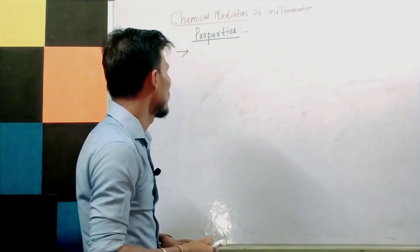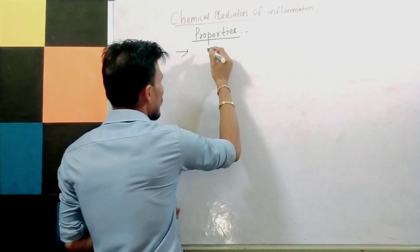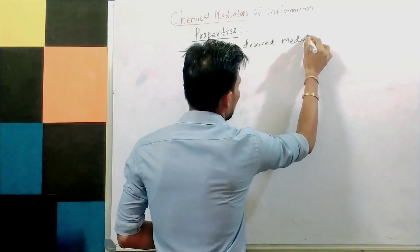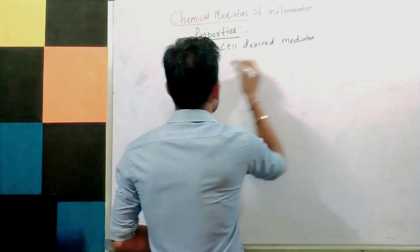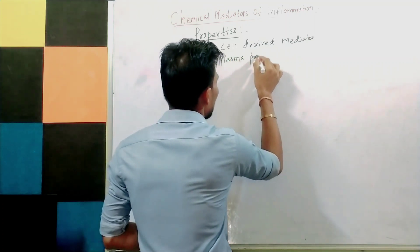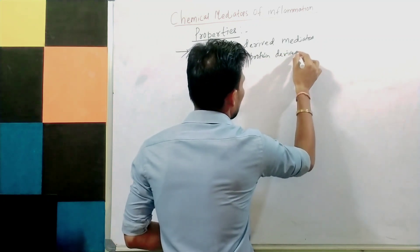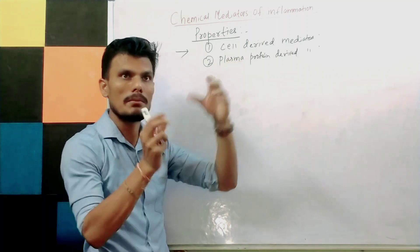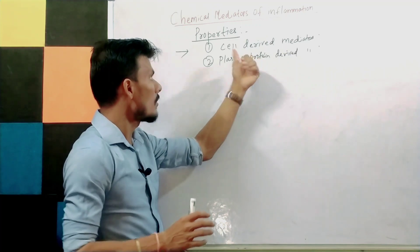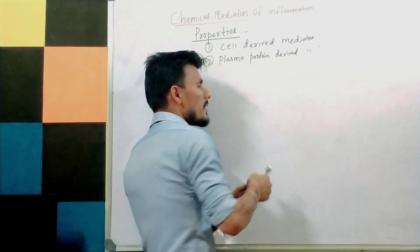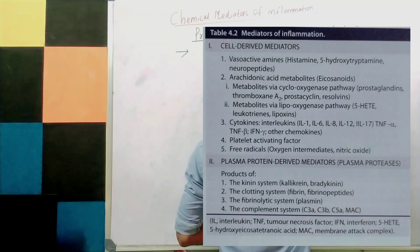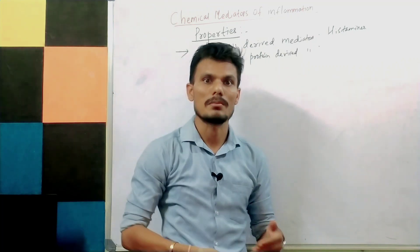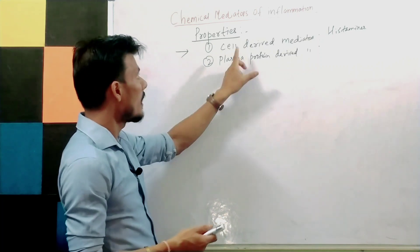Now let's look at the properties of chemical mediators. There are two types: the first is cell-derived mediators — chemicals stored in granules within cells. Examples include histamine and other vasoactive amines, prostaglandins, leukotrienes, cytokines such as tumor necrosis factor, interleukins, interferons, platelet-activating factor, and free radicals. All of those are cell-derived mediators.